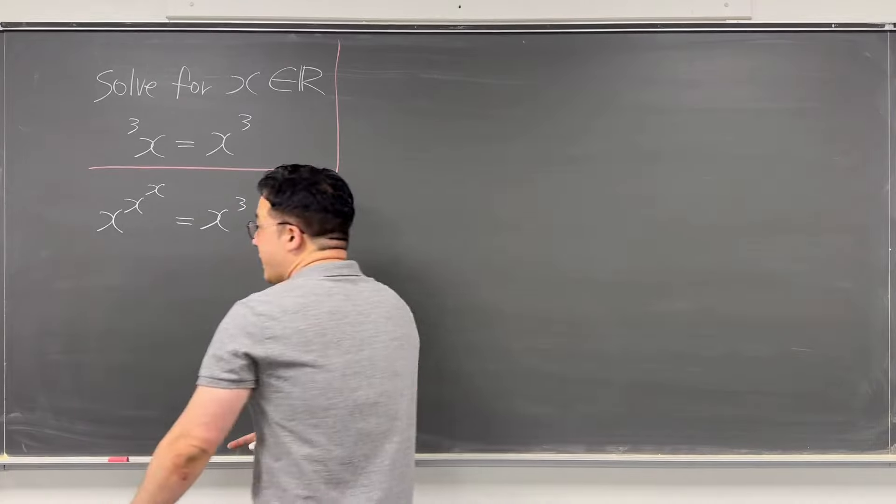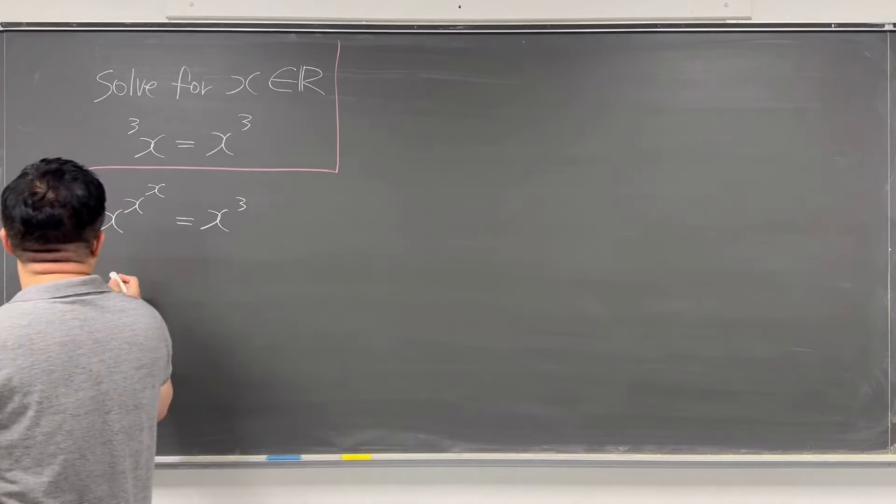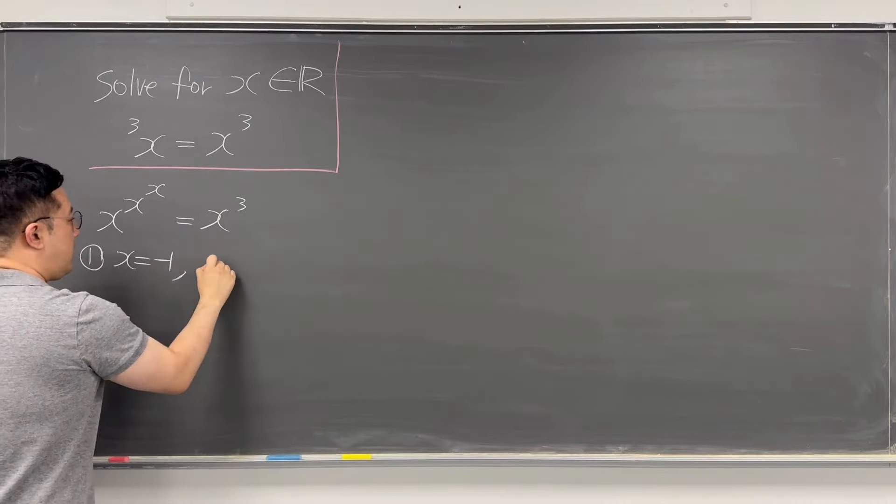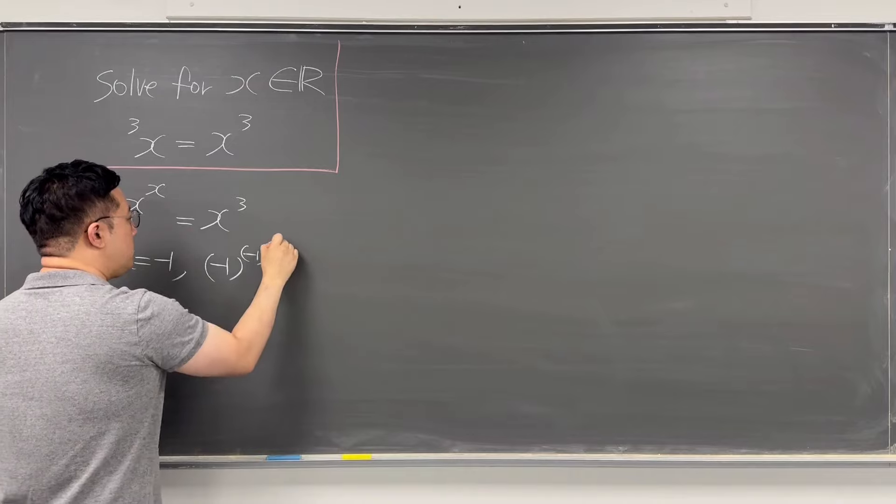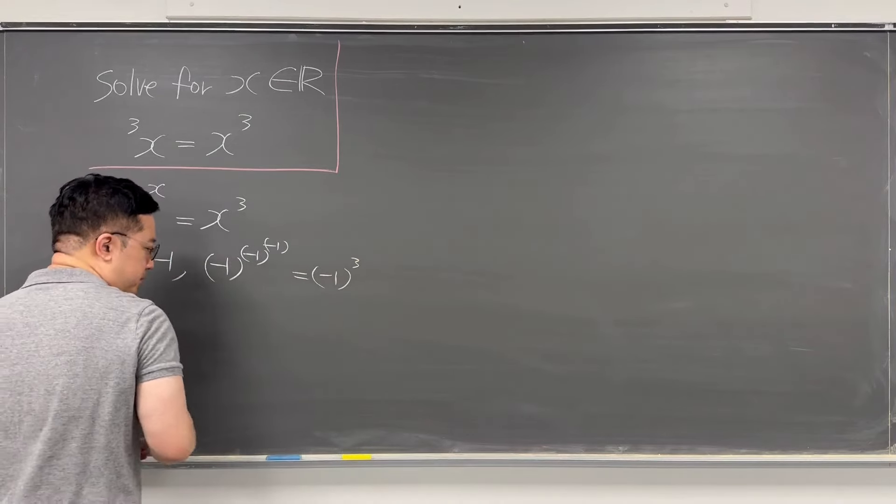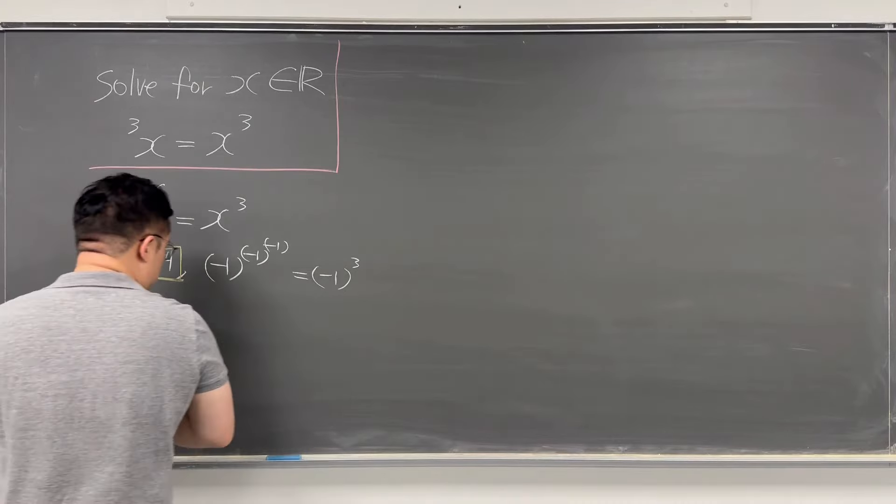So only by taking a look at it, we can get a trivial solution, which is x equals negative 1, right? Because when x equals negative 1, then negative 1 to the power of negative 1 to the power of negative 1, this is simply negative 1 cubed. So x equals negative 1. This is the trivial solution.